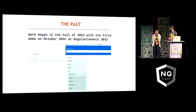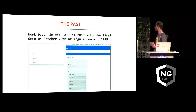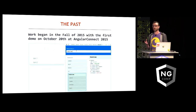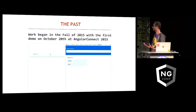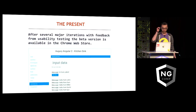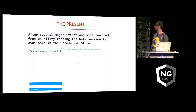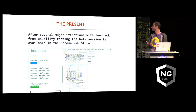Let's look back at the past. In the fall of 2015, we started working on this tool. We hacked a quick prototype in about a week for Angular Connect. As you can see on this animation, it's pretty basic, but it illustrated an important concept of us being able to get this information from Angular 2 and do something with it. We went quite far since then, through several major iterations, gathered a lot of feedback from internal usability testing as well as from the community, and now we have a beta version available on the Chrome Store.